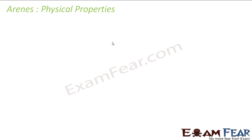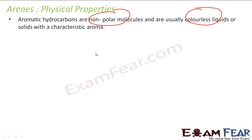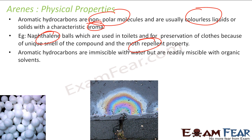Now let's talk about the physical properties of arenes. Arenes are non-polar molecules and they are colorless liquids. But they have an aroma — that's why they are called arenes. For example, naphthalene balls, which are used in toilets or to preserve clothes, have a unique smell. This smell is a moth-repellent property and will keep away moths.